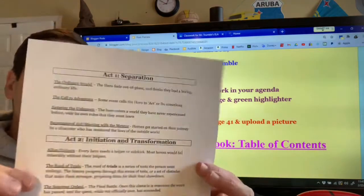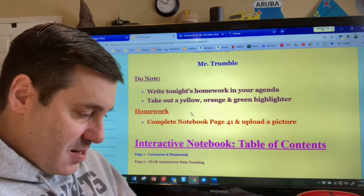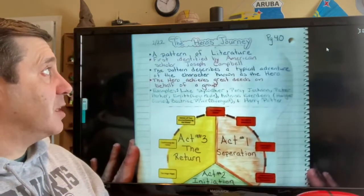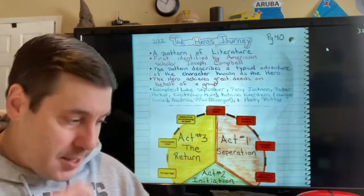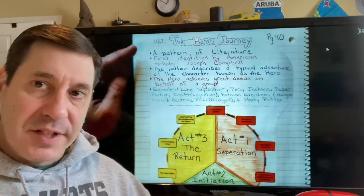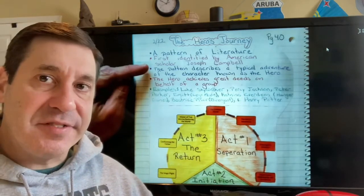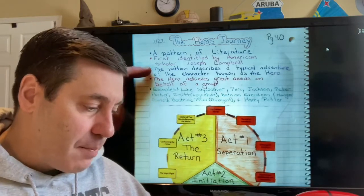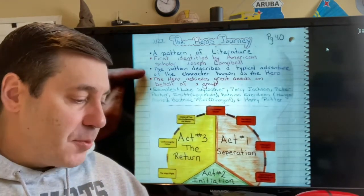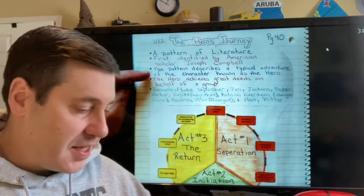Now that we have this, we're going to take a look at our notes from yesterday. Yesterday we learned that the hero's journey is a pattern of literature — a pattern of storytelling. It was first identified by Joseph Campbell, an American scholar studying books. The pattern describes a typical adventure of the character known as the hero.